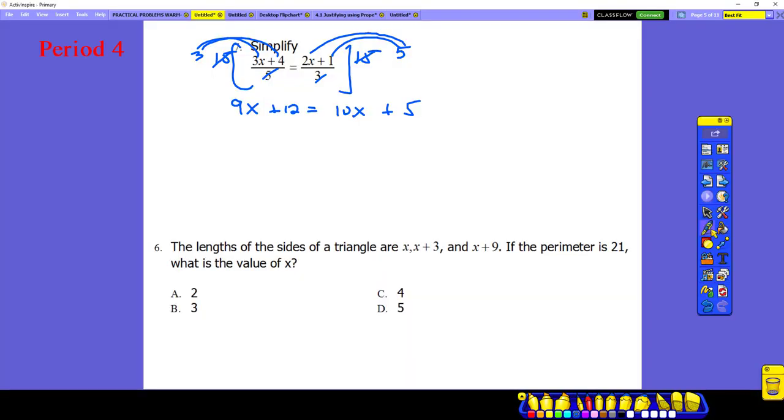After we multiply both sides by 15, you'll end up getting 9x plus 12 on the left side, 10x plus 5 on the right side.